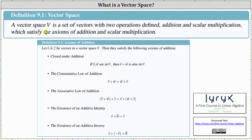What is a vector space? A vector space V is a set of vectors with two operations defined: addition and scalar multiplication, which satisfy the axioms of addition and scalar multiplication. There are five axioms of addition and five axioms of scalar multiplication that must be satisfied in order for a set of vectors to be a vector space.